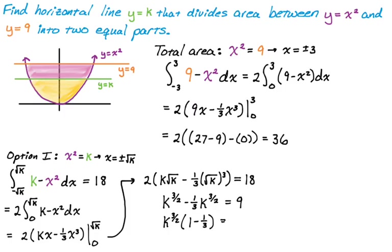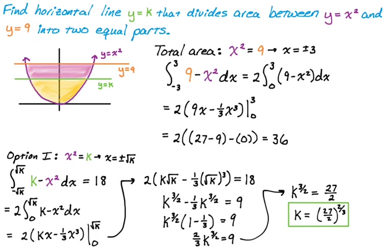This initially kind of looks like it's going to be impossible, but it ends up not terrible. So this is 2 thirds k to the 3 halves is equal to 9, multiply by 3 halves to get rid of that. So k to the 3 halves is 27 over 2, and that means that k must be 27 over 2 to the 2 thirds. That's our value of k. If we use that, that'll divide this region into two equal parts.